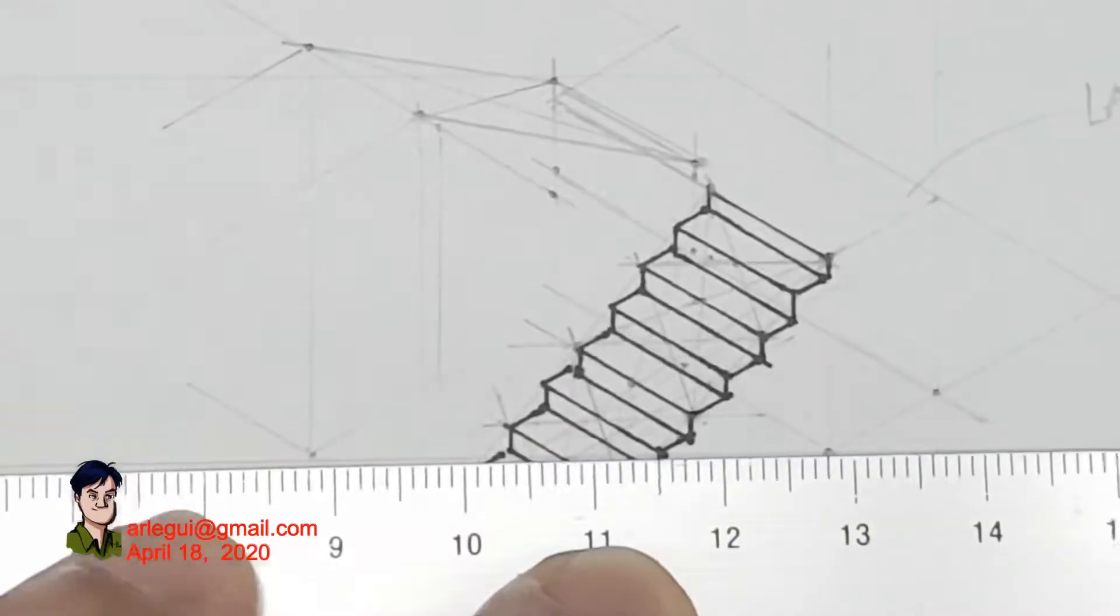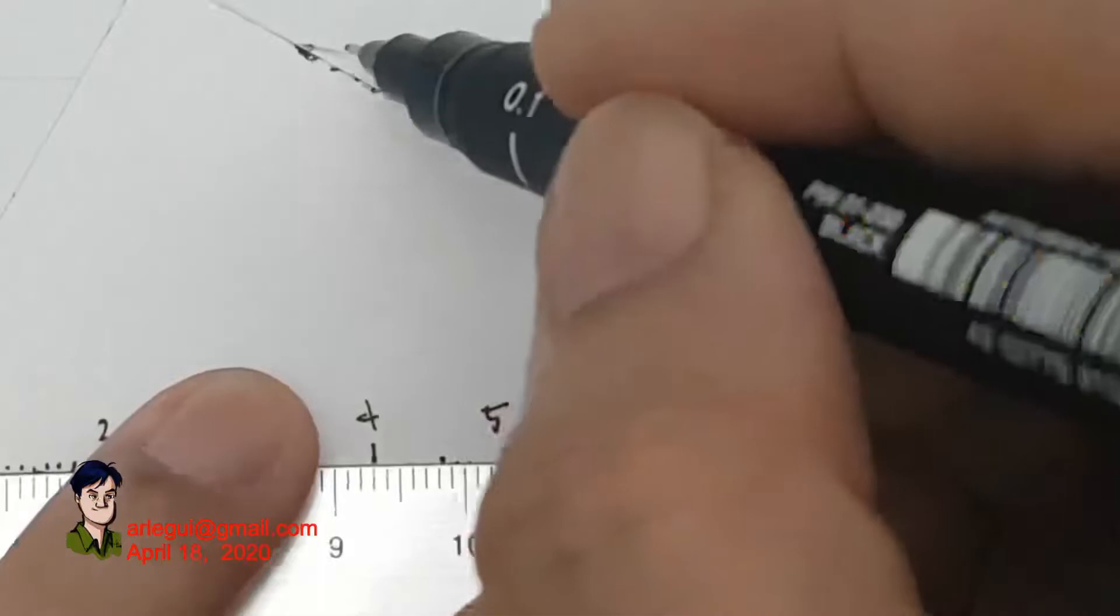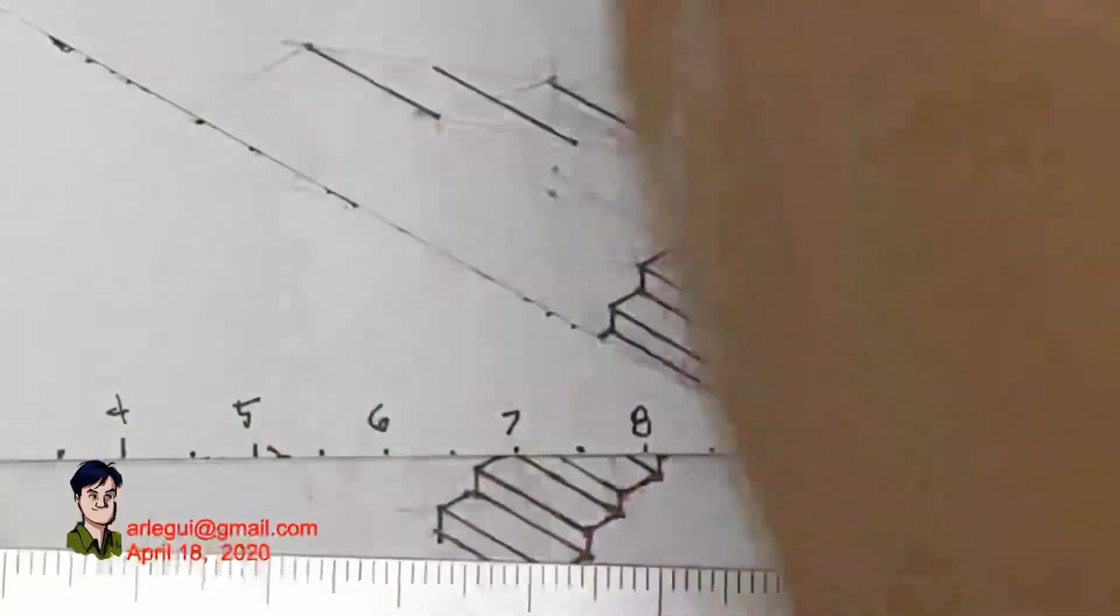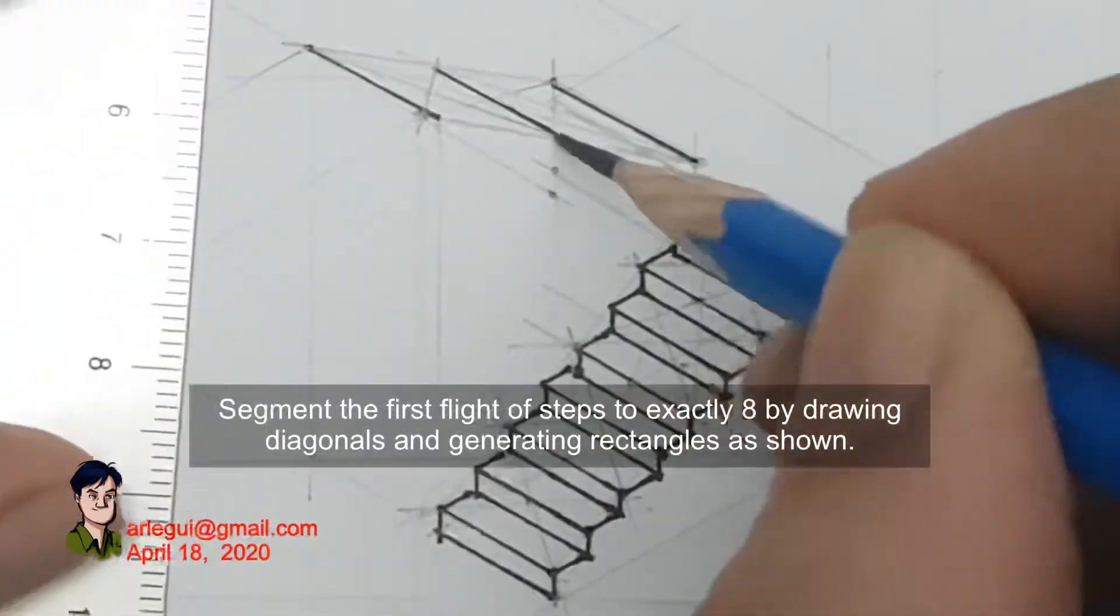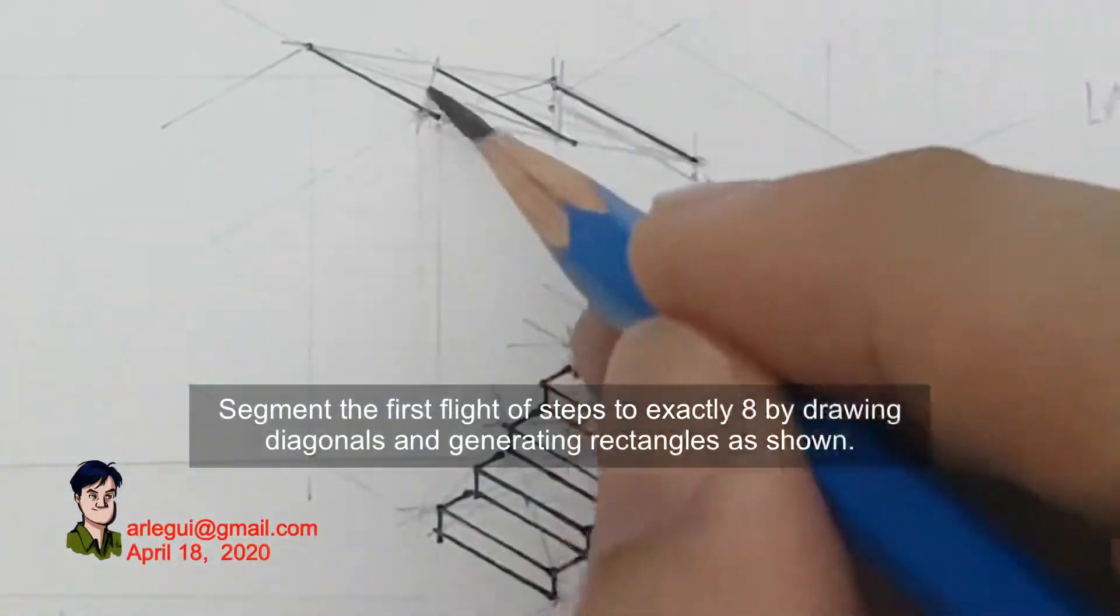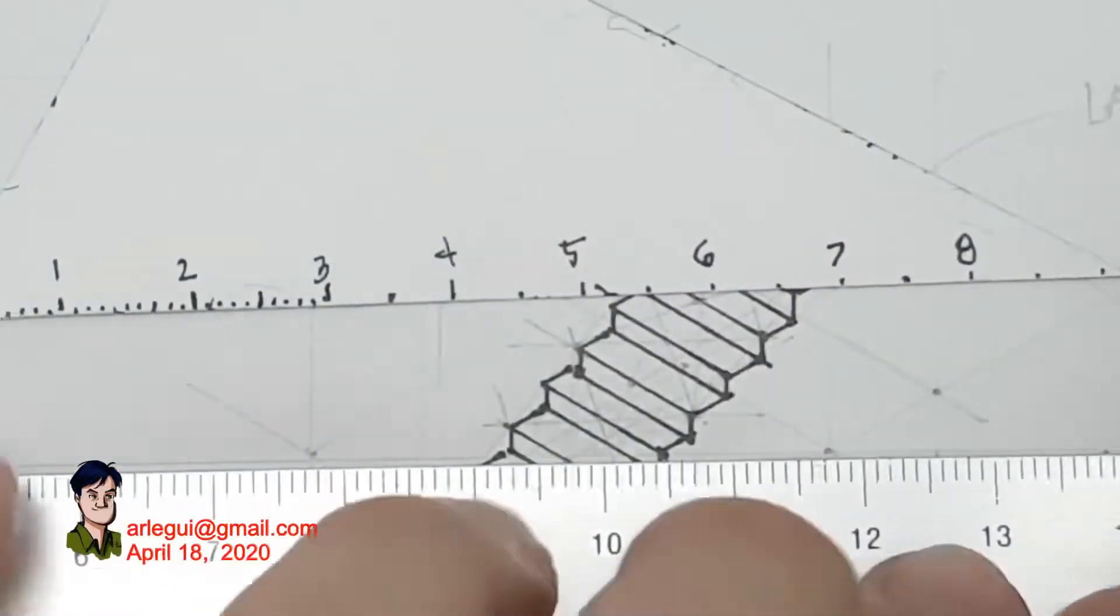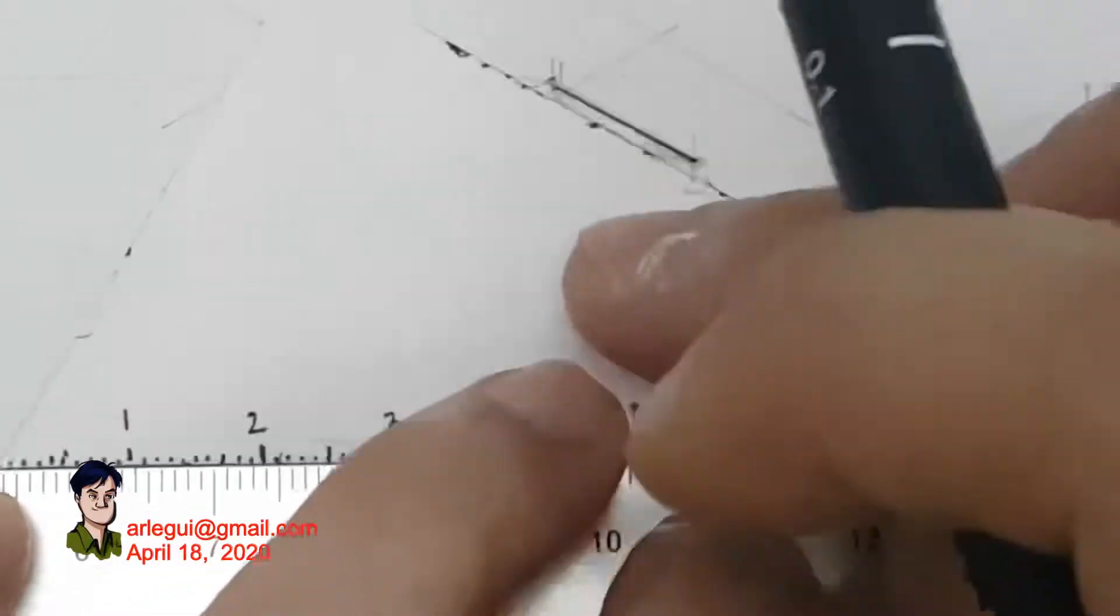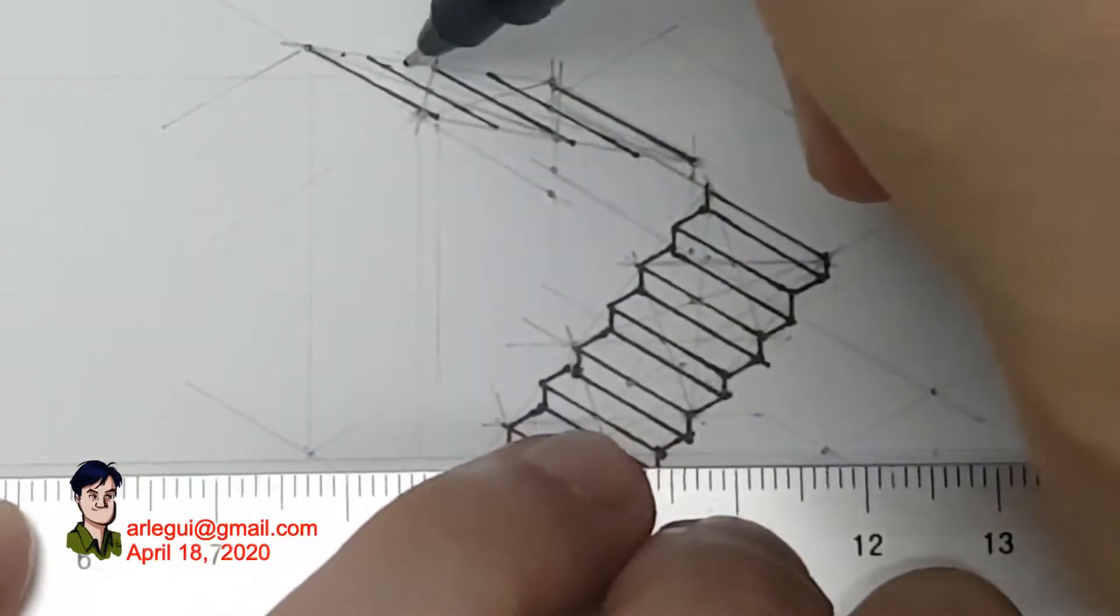I'm doing the same thing for the last flight of steps from the landing to the second floor. I'm using that X method again to determine, to subdivide this into eight equal parts.